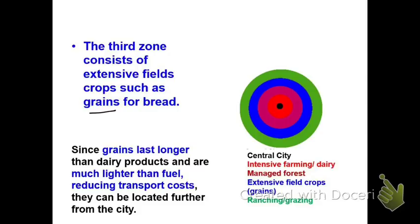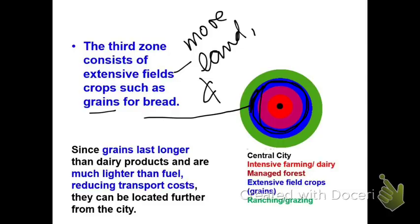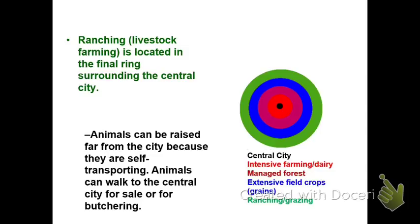Now we're moving away — think about extensive agriculture: we need more land, but grain would be relatively inexpensive to transport relative to those intensive-type activities like dairy. Dairy is very expensive to transport. And lastly, our furthest-most ring is going to be ranching livestock — something that needs a lot of space, but once it's been butchered, it doesn't take very much to move.